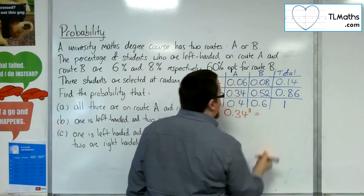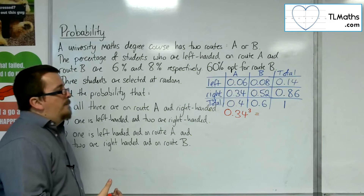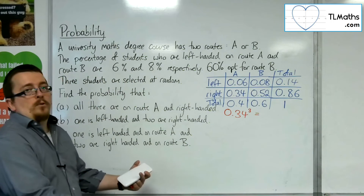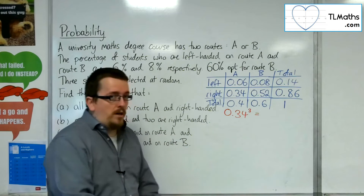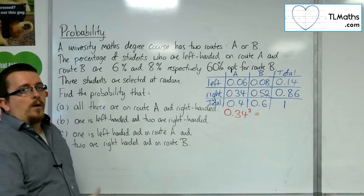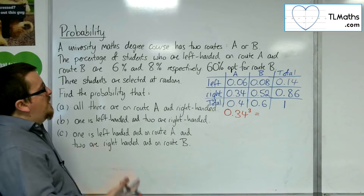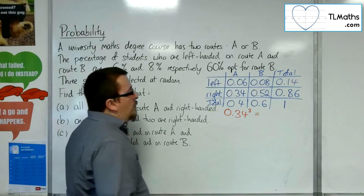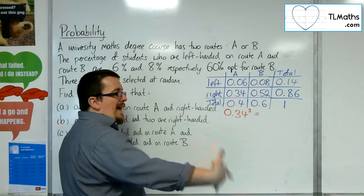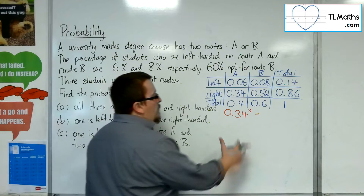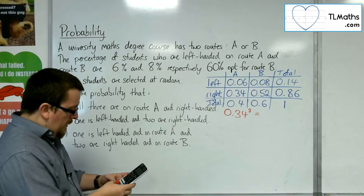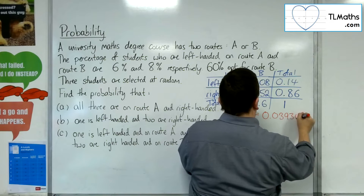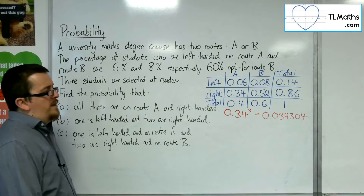We're not treating this as selecting from a fixed pool of 100 people where the percentage drops each time. We're looking at proportions, so we don't know how many people this represents. The percentage isn't going to change as we select people. So 0.34 cubed is 0.039304, or 0.0393 to 3 significant figures.